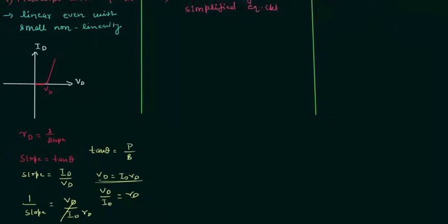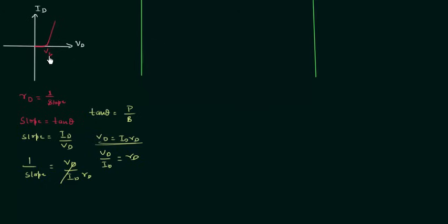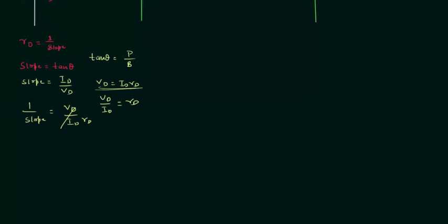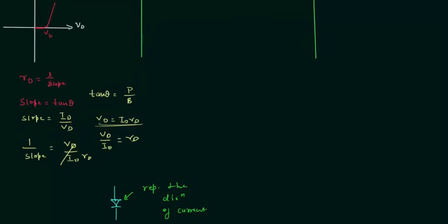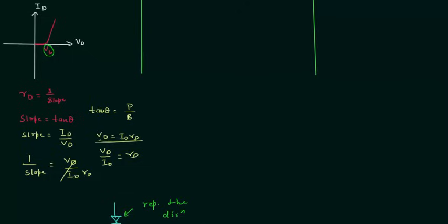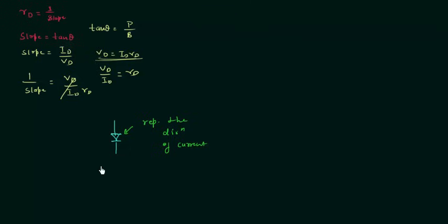Now we will draw the equivalent circuit. In this model we have the barrier potential Vb and the diode resistance Rd. In the equivalent circuit, first I will make the ideal diode — in the ideal diode, both barrier potential and diode resistance are equal to 0. We use the ideal diode symbol to represent the direction of current. Then we have the barrier potential Vb, which opposes the flow of current, so its polarity will oppose the diode current. And there is the diode resistance Rd.